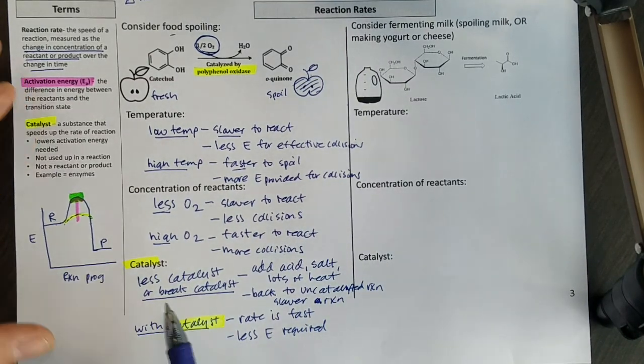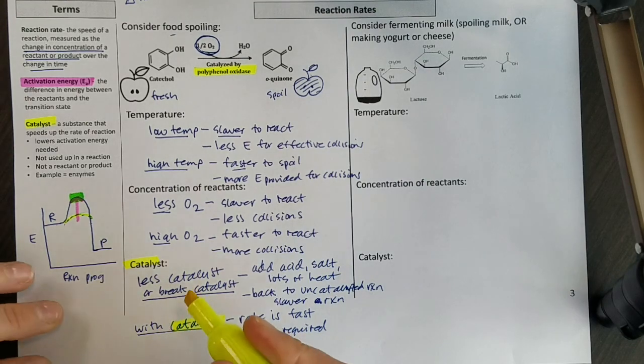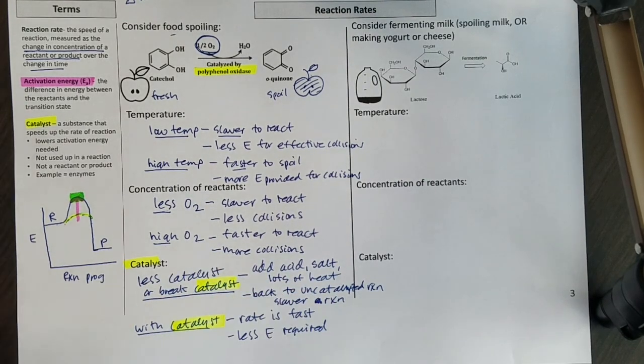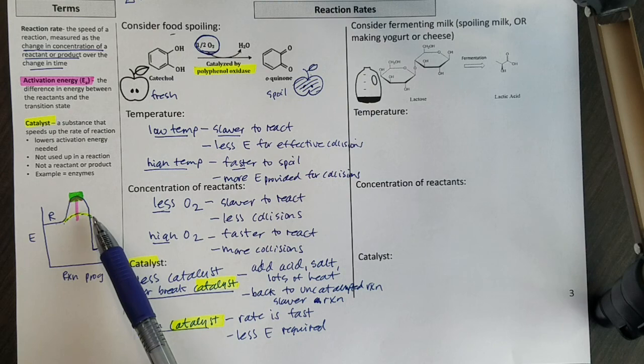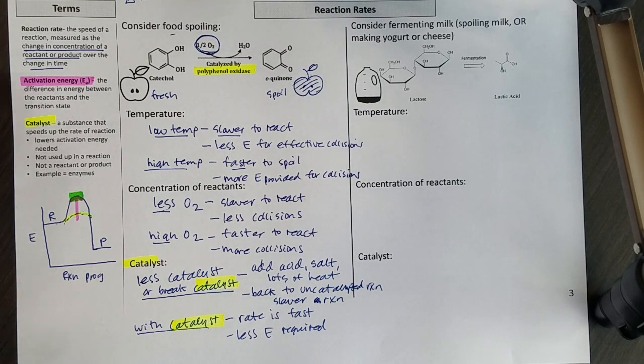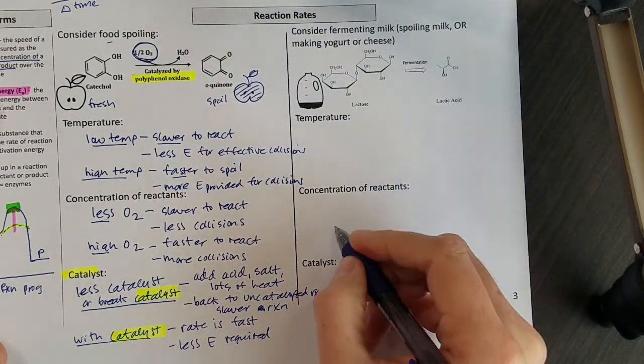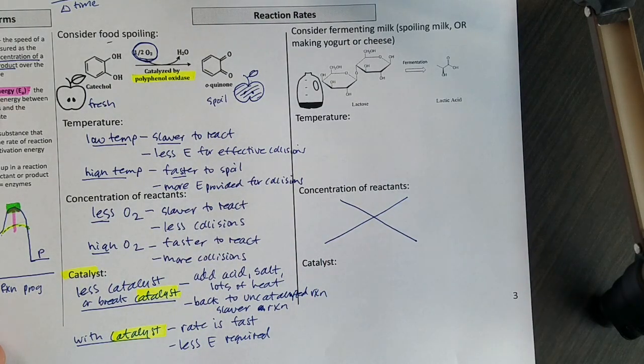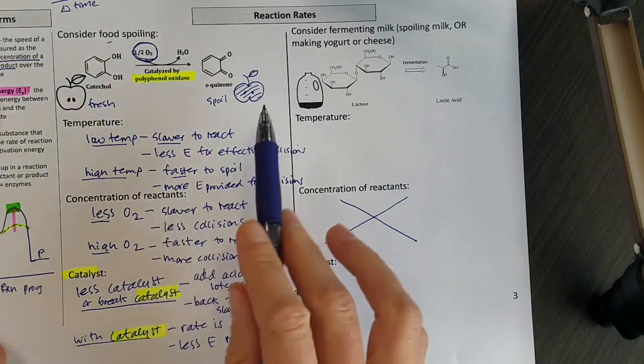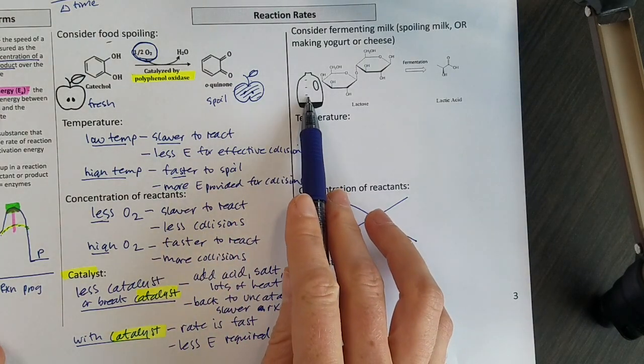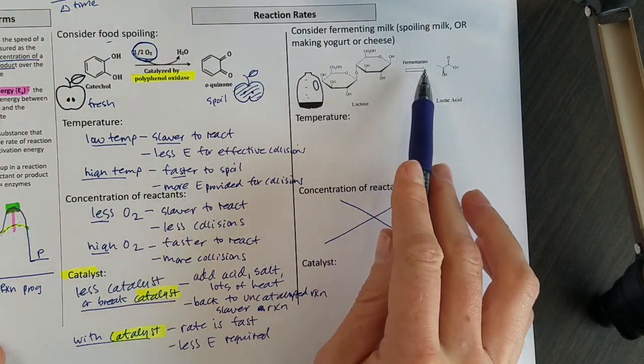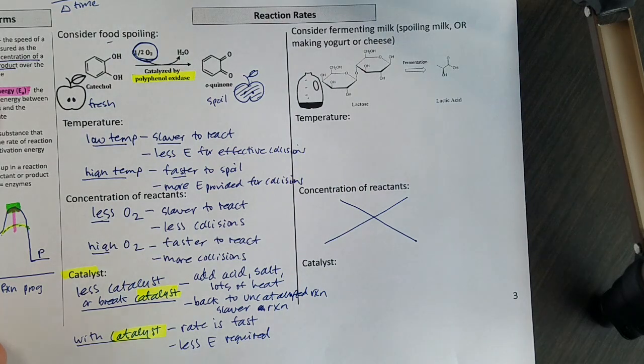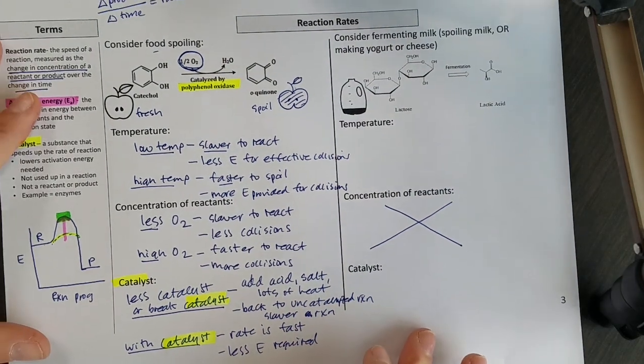So sometimes you want that catalyst, but sometimes you're like, let me break that catalyst, and that way my food won't spoil so quickly. So you can practice some of those concepts over here. We won't do this concentration of reactants here, but you can think about milk, which has lactose in it, fermenting and turning into lactic acid as one of the byproducts of that.